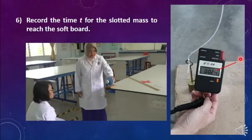For the hanging slotted mass of 140 grams, when we release it from the height of 70.5 cm, the time shown by the stopwatch is 2.75 seconds.